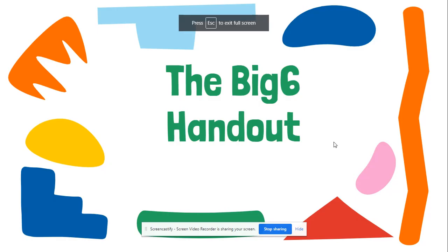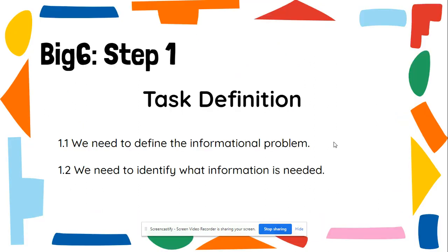Now let's go over what the Big Six method is. Step one is called task definition. What exactly are we researching? There are two things: we need to define the informational problem — what is the problem you're trying to find a solution to — and secondly, we need to identify what information is needed. Once I have my topic, what information do I need in order to answer that question or solve that problem?